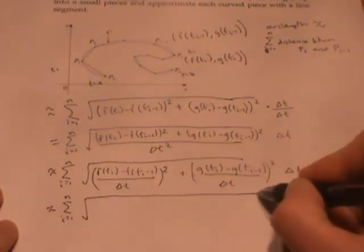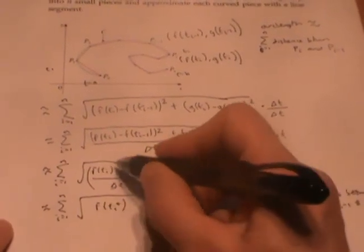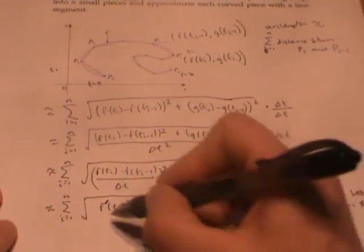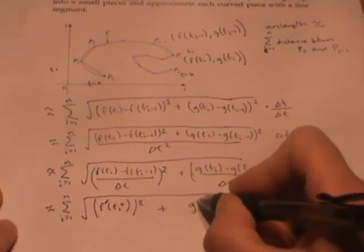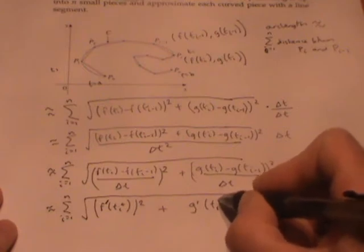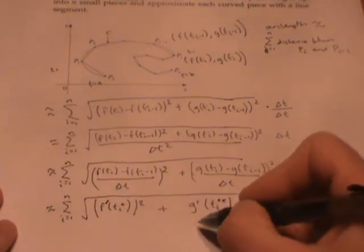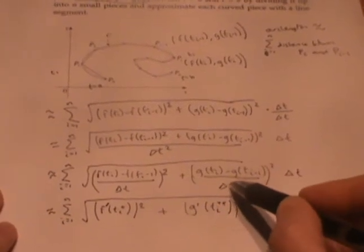there is a number t, we'll call it tI star, between tI minus 1 and tI so that this ratio—the slope of the secant line—is exactly achieved by the derivative at this tI star. Same thing with g; it could be a slightly different value of t that works, we'll call it tI double star. But the idea is that this quantity is approaching the derivative as delta t gets small.